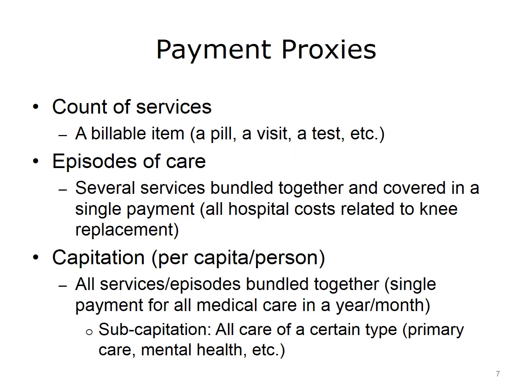Since quality and quantity are hard to measure, various proxies are used for payment. The most common proxy is the count of services — a billable item such as a pill, a visit, or a test. An alternative method is to pay for an episode of care, where an episode would be defined, such as 90 days from the beginning of a knee replacement procedure, and a single payment would be made regardless of how many services were used.